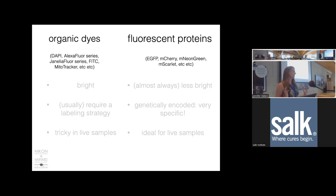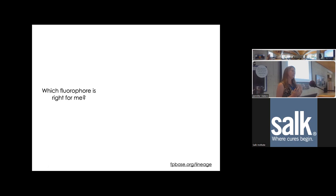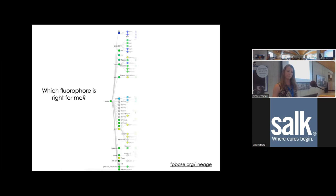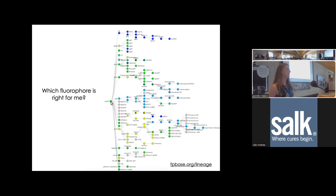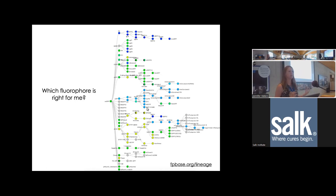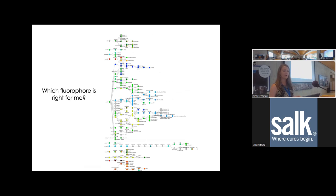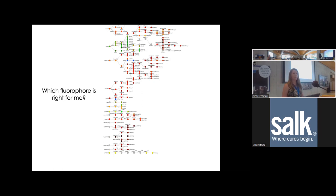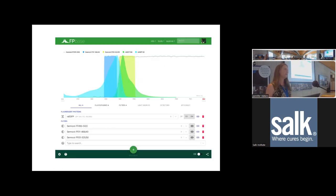Even once you've chosen between classes of fluorophores, there are still many to choose from. The original GFP cloned from jellyfish has many engineered derivatives—brighter, more stable, with different excitation and emission spectra suited for different applications. There are tons of them, and more are being developed all the time. Choosing the right fluorophore requires research. We recommend a tool called FPBase.org, made by Hallie Lambert—it's a database of not just fluorescent proteins but also organic dyes.